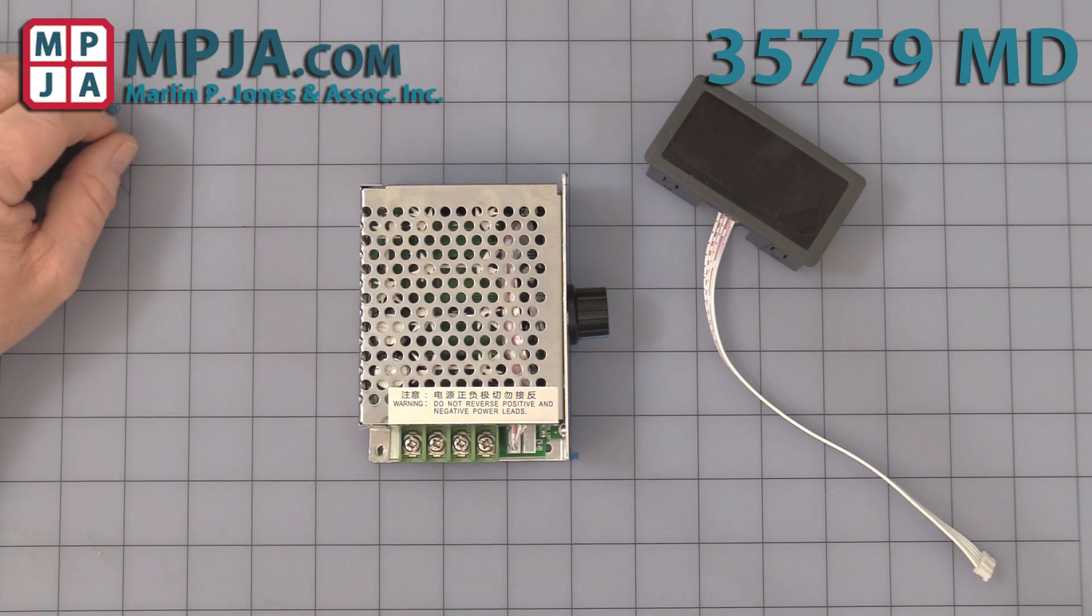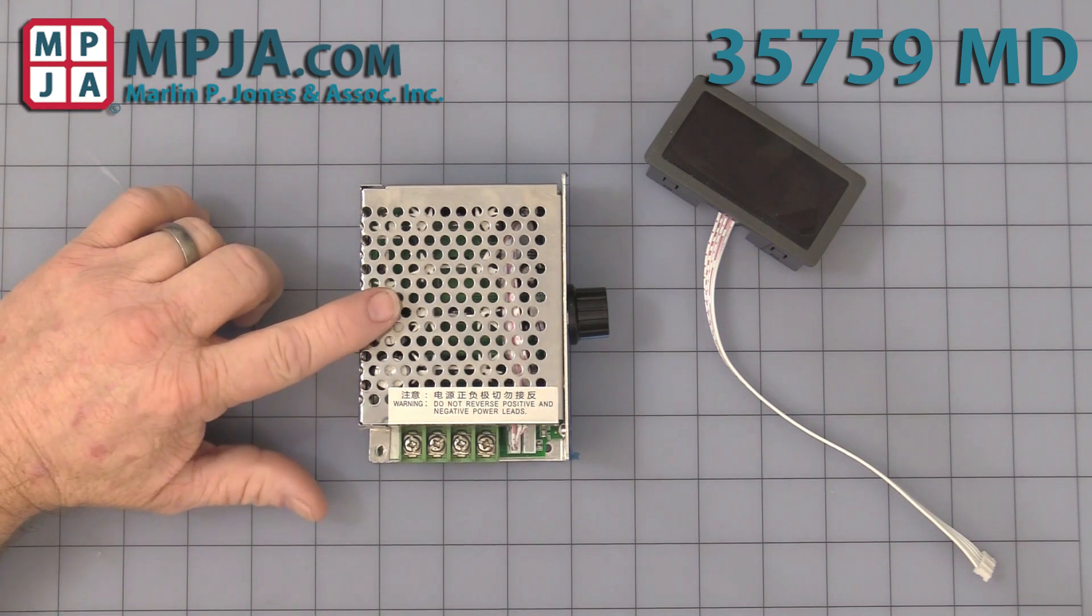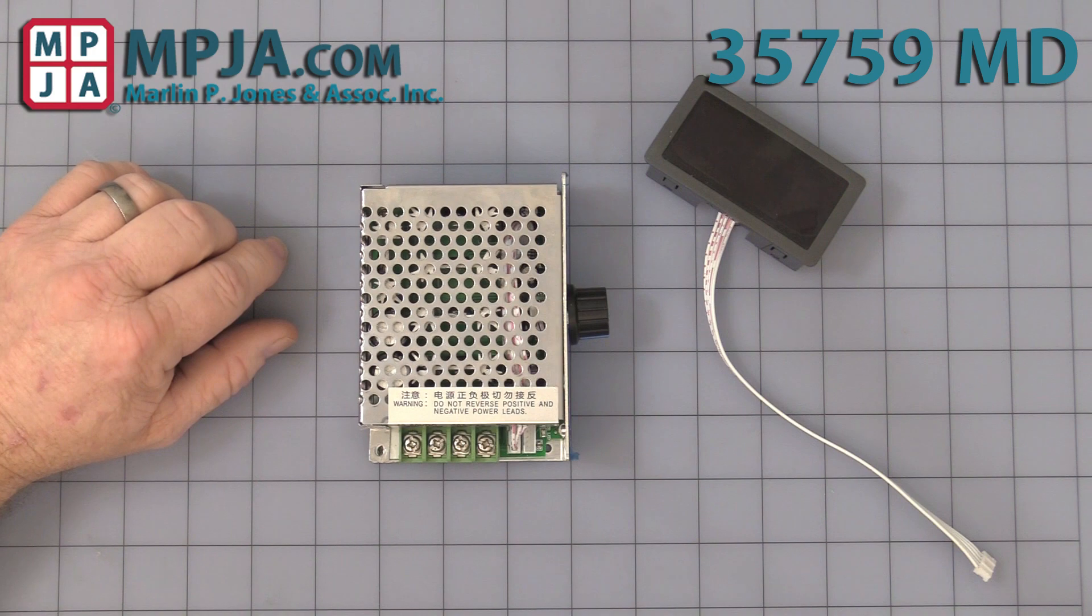Hello, today's video is on stock number 35759MD, the modular enclosed wide range pulse width modulation DC speed control kit.